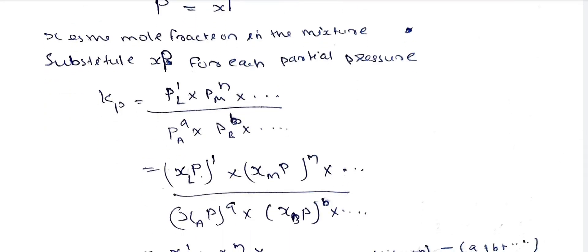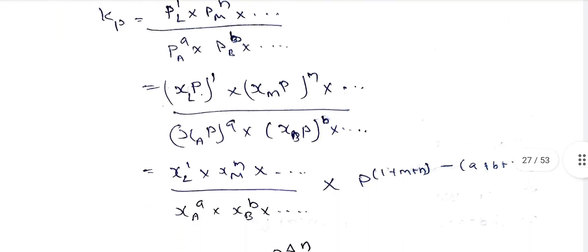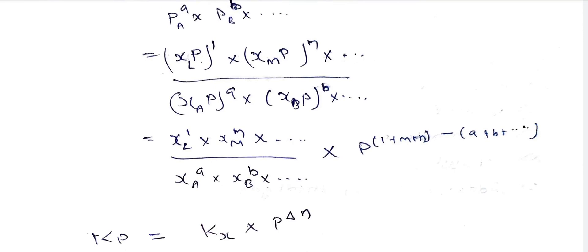The Kp expression becomes: Kp equals PL raised to L times PM raised to M and so on, divided by PA raised to A times PB raised to B and so on. Substituting, this becomes xL·P all raised to L times xM·P all raised to M, divided by xA·P all raised to A times xB·P all raised to B. Separating the mole fraction terms and the P terms gives xL raised to L times xM raised to M divided by xA raised to A times xB raised to B, multiplied by P raised to (L plus M plus etc. minus A plus B plus etc.).